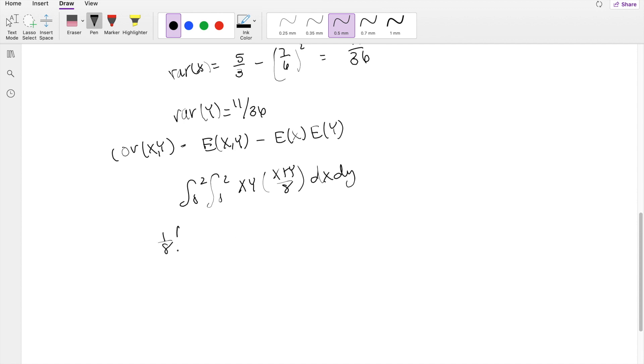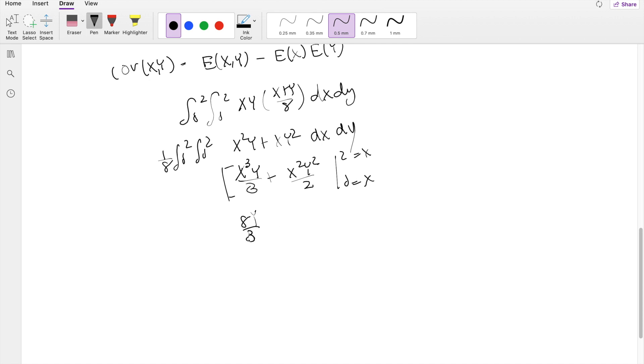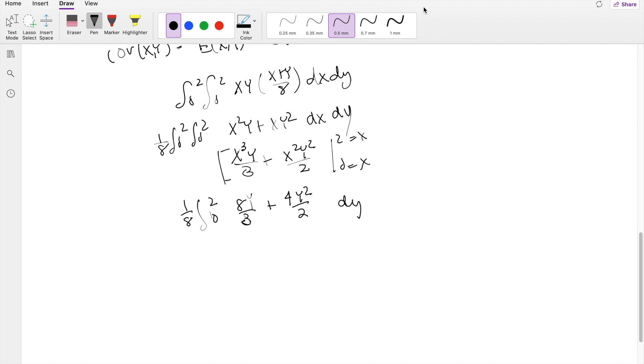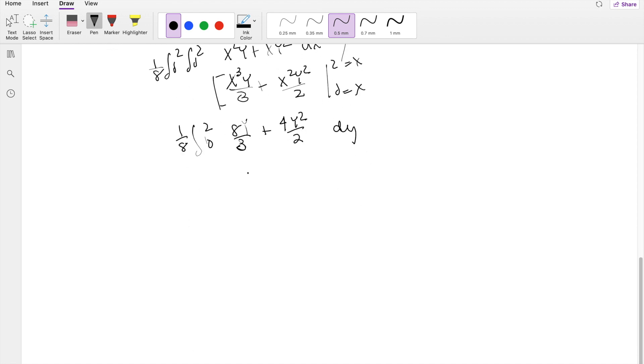Throwing that 1/8 outside, 0 to 2, 0 to 2, x squared y plus x y squared, integrating in terms of dx first. When I integrate in terms of dx, I get x cubed y over 3 plus x squared y squared over 2, from 0 to 2 for x. This equals 8y/3 plus 4y squared over 2, dy from 0 to 2. Integrating in terms of y, you get y squared over 6 times 8 plus y cubed over 6 times 4, from 0 to 2. This equals 1/8 times 32/6 plus 32/6, which equals 4/3.